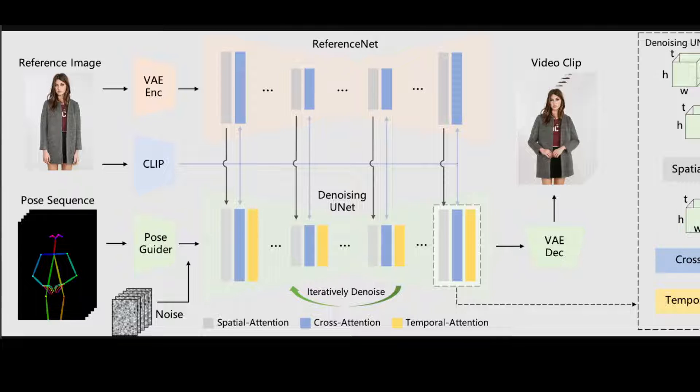What is happening here is that on the left hand side starting the pose sequence is initially encoded using pose guider and fused with multi-frame noise. Followed by the denoising unit conducting the denoising process for video generation.